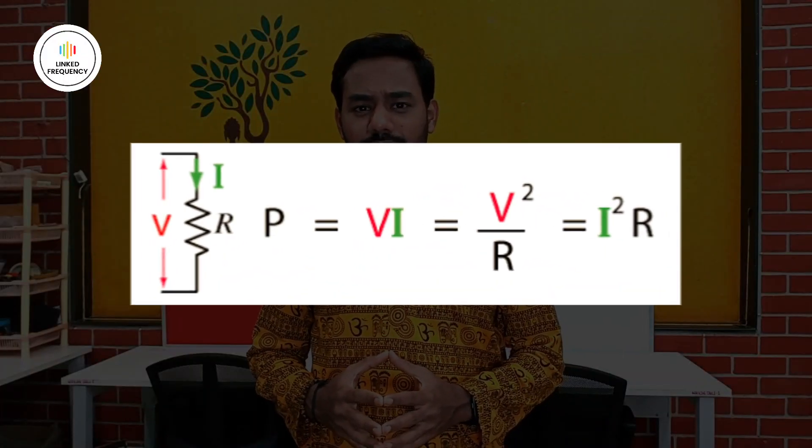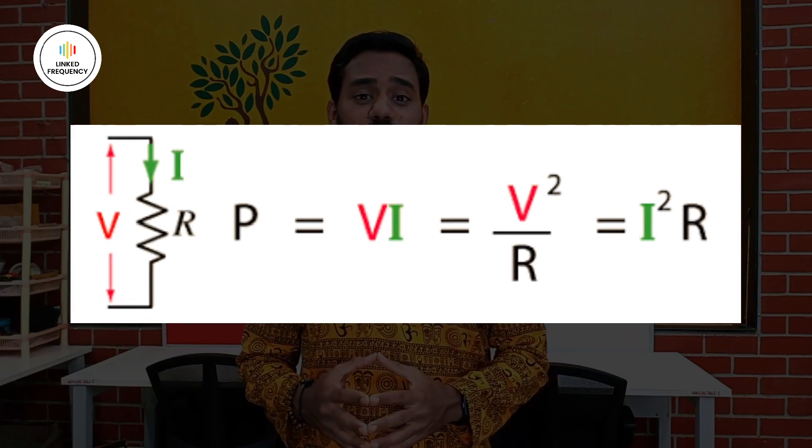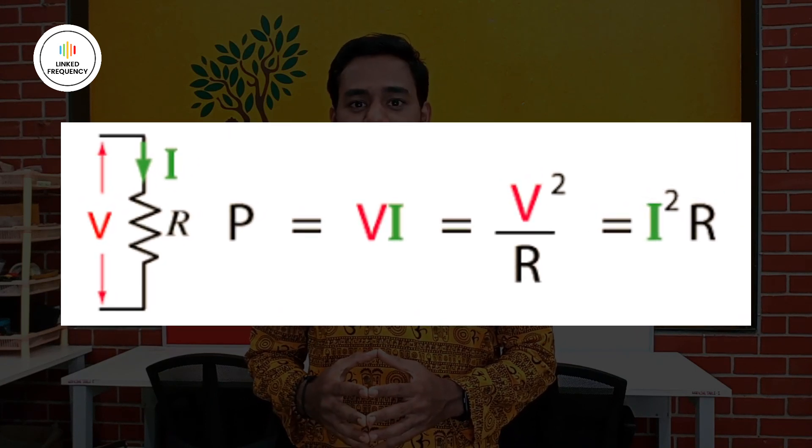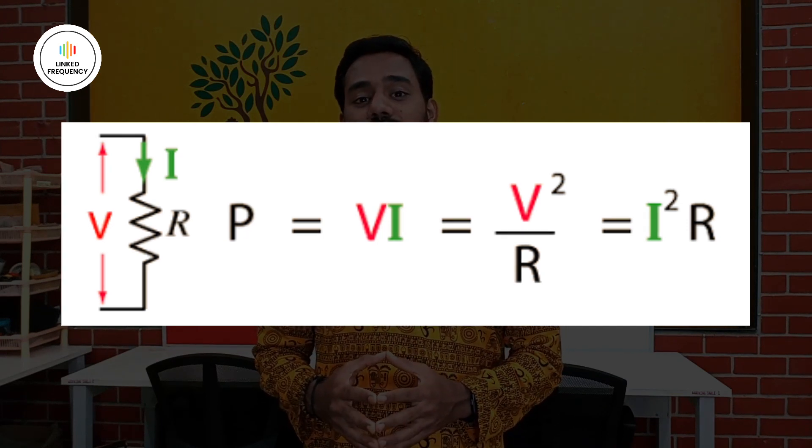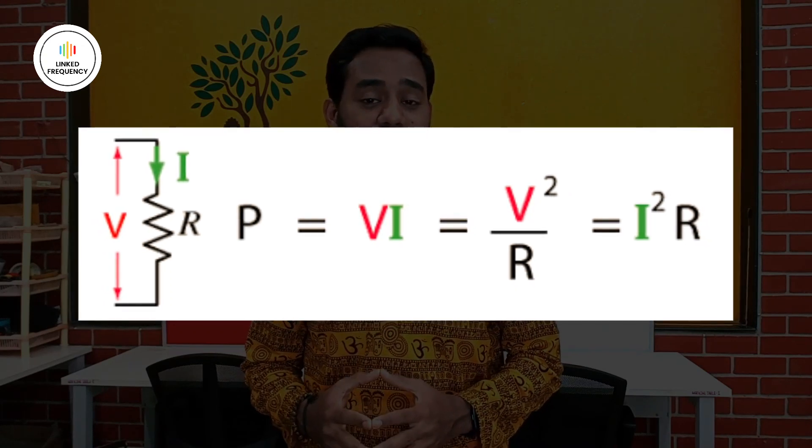Now let us talk about how to calculate the power rating. The formula is P equals I squared times R, where I is the maximum current you would like to flow through the resistor and R is the resistance value. Using this formula we can identify the maximum power that can be dissipated through the resistor. This power rating is very essential for current sense resistors and in power electronics. Based on the application, we change the power rating accordingly, however the quarter watt resistor is the most general and widely used in electronics.